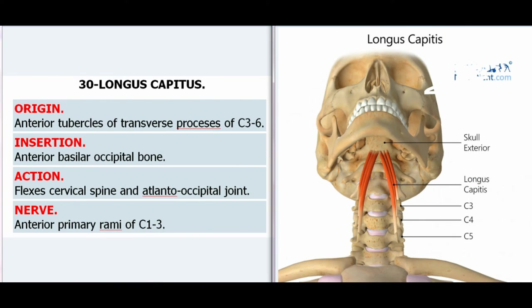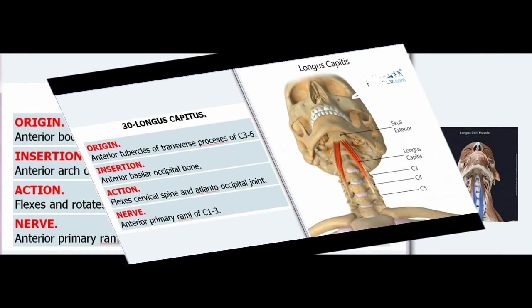30. Longus Capitis. Origin: Anterior tubercles of transverse processes of C3–6. Insertion: Anterior basilar occipital bone. Action: Flexes cervical spine and atlanto-occipital joint. Nerve: Anterior primary rami of C1–3.